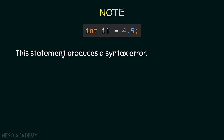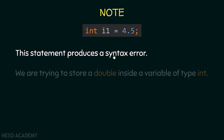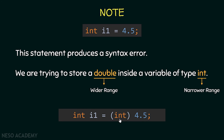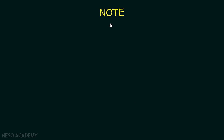Important note: assigning 4.5 directly to an integer variable produces a syntax error — Java tells you that you're trying to store a double inside an integer. To fix this, use explicit casting to convert 4.5 to an integer.